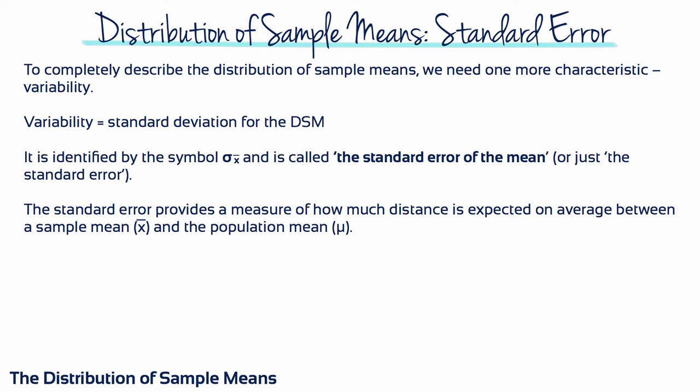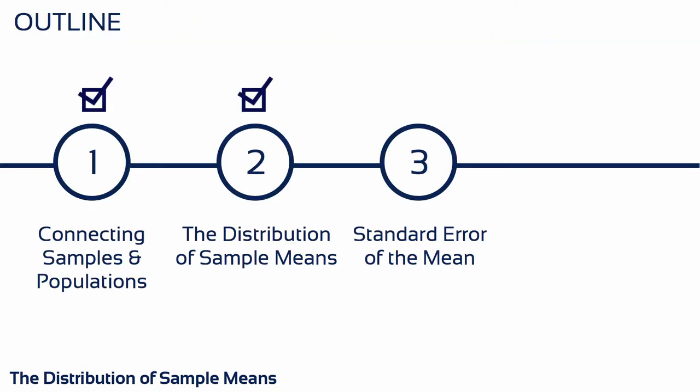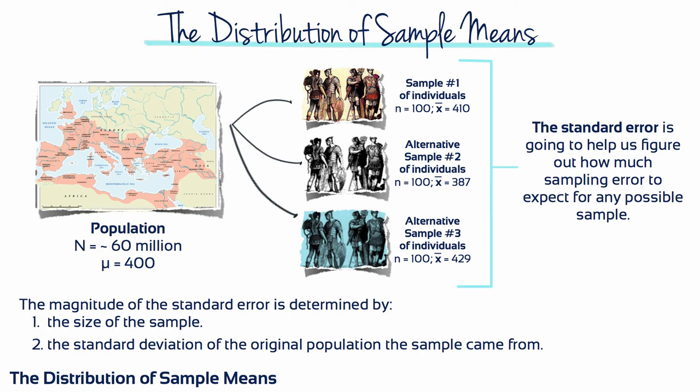The standard error measures exactly how much difference should be expected on average between a sample mean and the population mean. In other words, the standard error provides a method for defining and measuring sampling error. The standard error is an extremely valuable measure because it specifies precisely how well a sample mean estimates its population mean. The magnitude of the standard error is determined by the size of the sample and the standard deviation of the original population the sample came from.